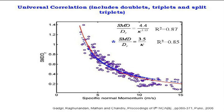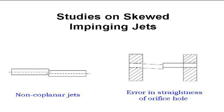One other problem I looked at was what happens in impingement when there is a skew — when two jets do not meet exactly as expected, but instead there is a mismatch between them. This was motivated by a practical injector that came to me for testing: twin triplets where the jets meet well at some flow conditions but not at others.